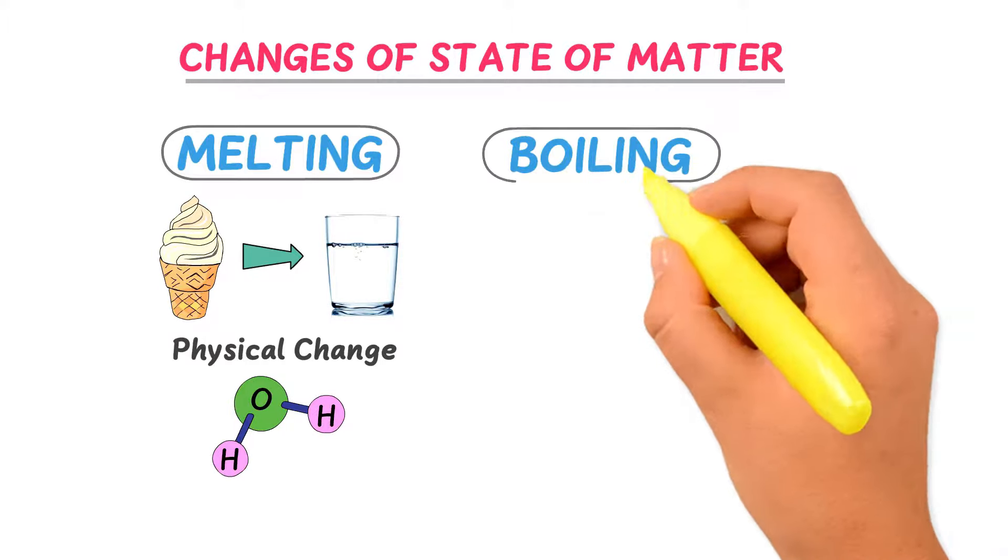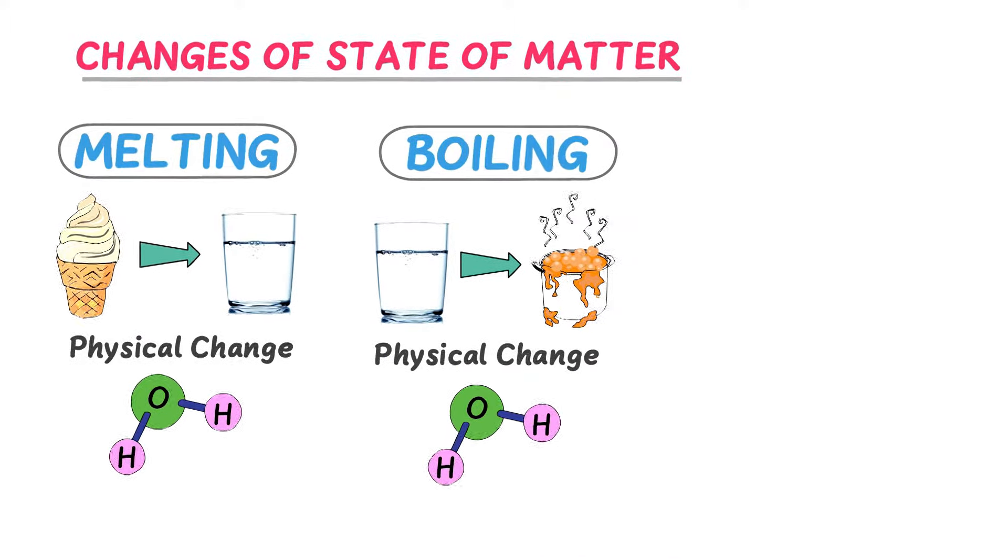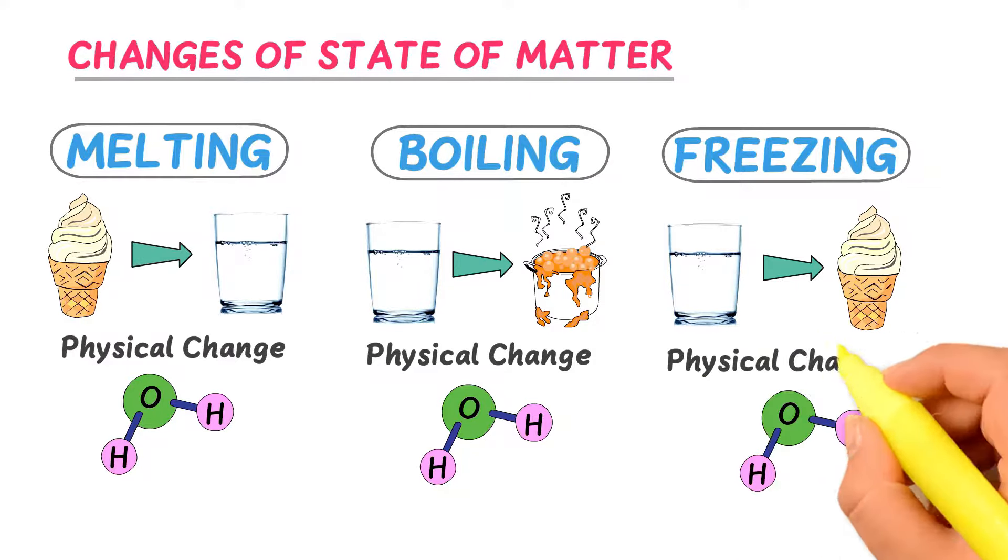The second process is boiling. During boiling, water is converted into steam, or gaseous state. No new substance is formed. Thus it is a physical change. The third process is freezing. We know that during freezing, water converts into ice. No new substance is formed. Thus it is also a physical change.